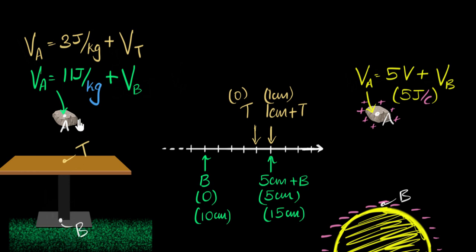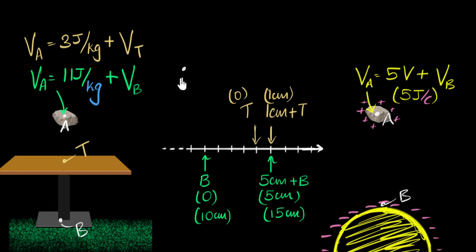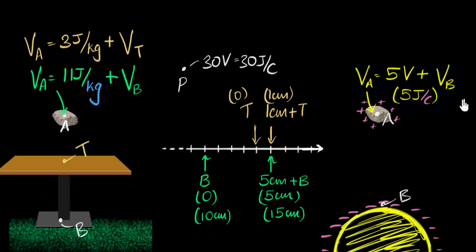So when I say the potential at some point A is five volts or five joules per coulomb, what I'm really saying is that it's five volts more compared to the potential at some other reference point. Potential or potential energy is always represented with respect to some other point. For gravity, we most likely always choose the lowest point in our experiment as zero or as our reference point. But when it comes to charges, what's our convenient reference point? The most convenient point we like to choose is infinity. So if the reference point is not mentioned and someone says the potential at point P is 30 volts, we always choose infinity as our reference point.